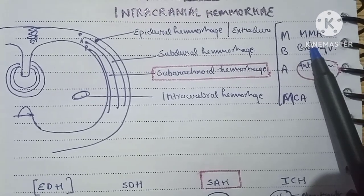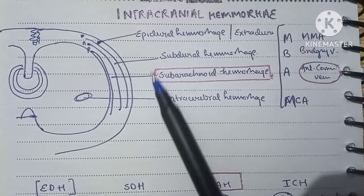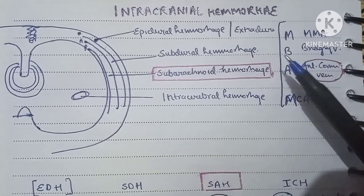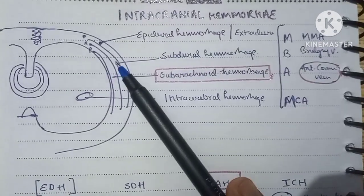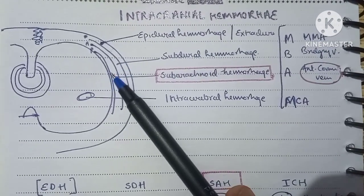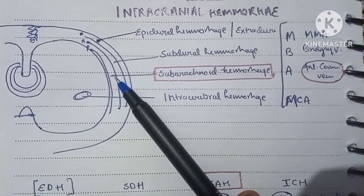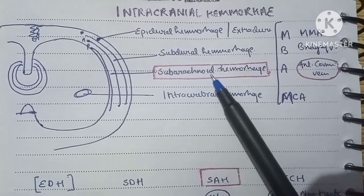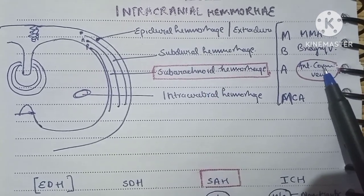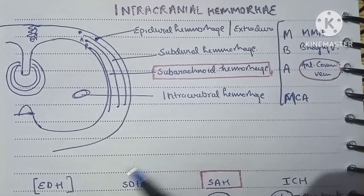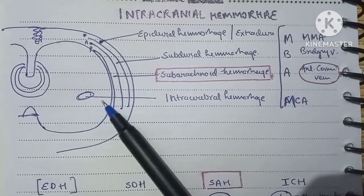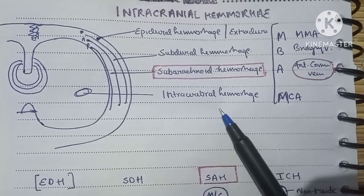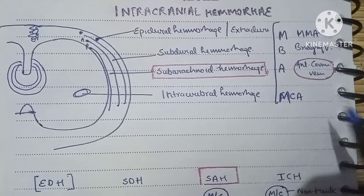The vessel implicated in epidural hemorrhage is the middle meningeal artery. The space between the dura and the arachnoid is the subdural space, and the vessel implicated here is the bridging vein, which goes from outside in and inside out. The subarachnoid space between the arachnoid and pia is where CSF flows; the anterior communicating artery is involved in subarachnoid hemorrhage. Intracerebral hemorrhage occurs inside the parenchyma of the cerebral cortex, with the middle cerebral artery involved.